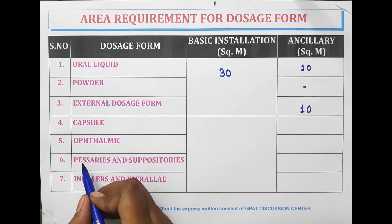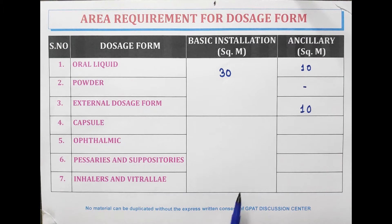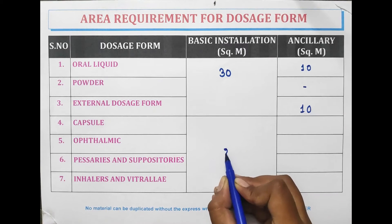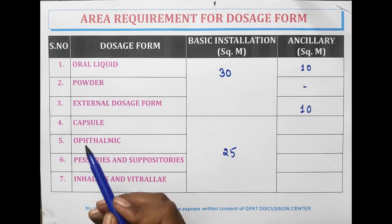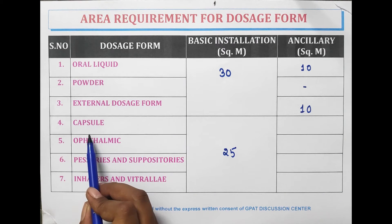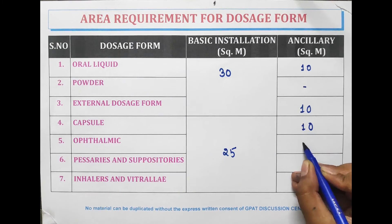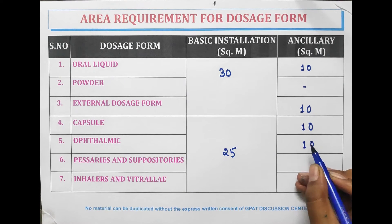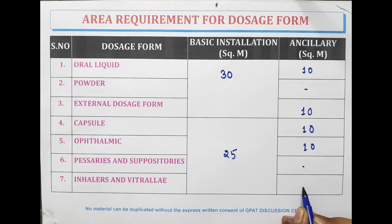For capsules, ophthalmics, pessaries, suppositories, inhalers, and vitrals, the minimum area requirement for basic installation is 25 meter square. For ancillary area, capsules require 10 meter square, ophthalmics require 10 meter square, and for pessaries, suppositories, inhalers, and vitrals, no minimum requirement is provided.